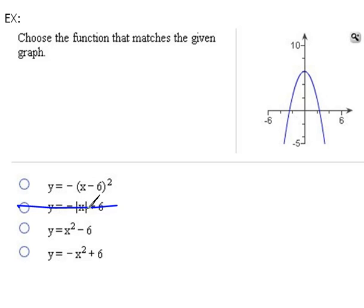Because remember, an absolute value function is that V-shaped function. The square functions are these nice curved ones. So that's just by knowing our library of functions, we can automatically knock that one out.